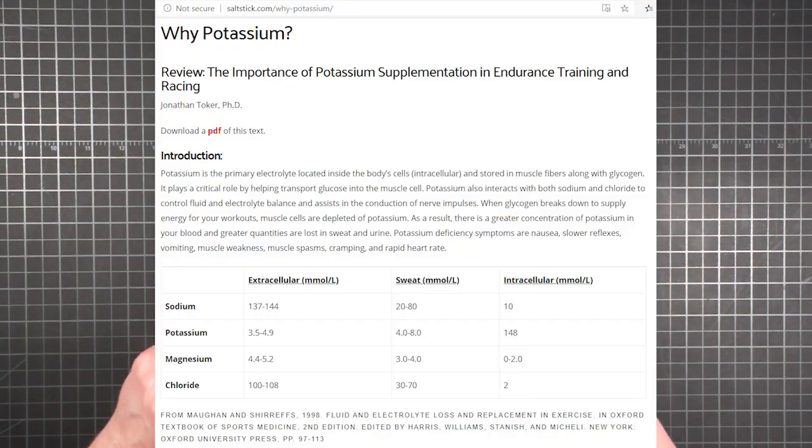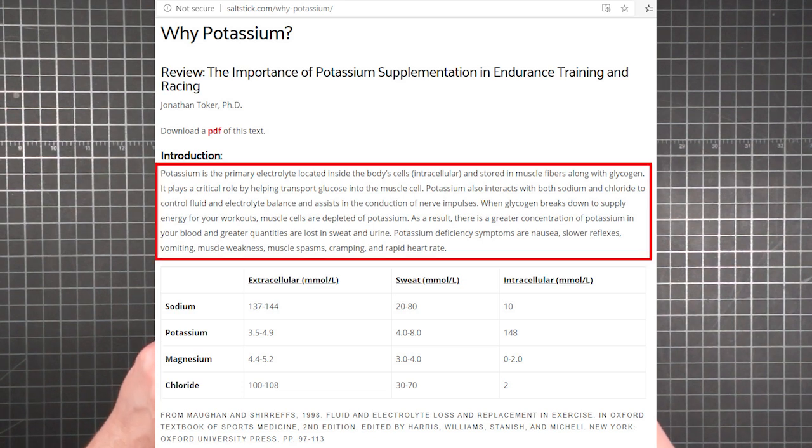And what's potassium good for? Well, recalling Dr. Toker's article from part four, while sodium is dominant in the extracellular space, potassium is the primary electrolyte inside your body's cells. So not only does it work with sodium and chloride to control fluid balance, but it's also critical in the transport of glucose into muscle cells.